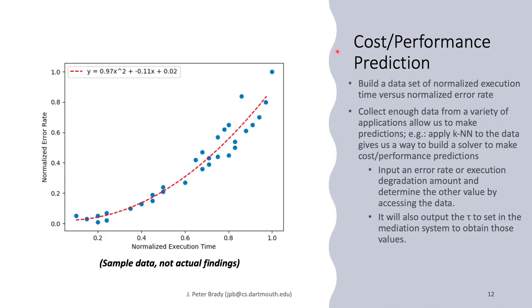But if we collect enough of this data, the execution time, the error rate and the tau that this was done at, we can then apply a function such as k-nearest neighbor to that data to give us a way to build a solver to make these sort of cost performance predictions. We can input an error rate or an execution degradation amount and determine the other values by accessing the data. This would also give us a tau to set in the mediation system for that target application to obtain those values.